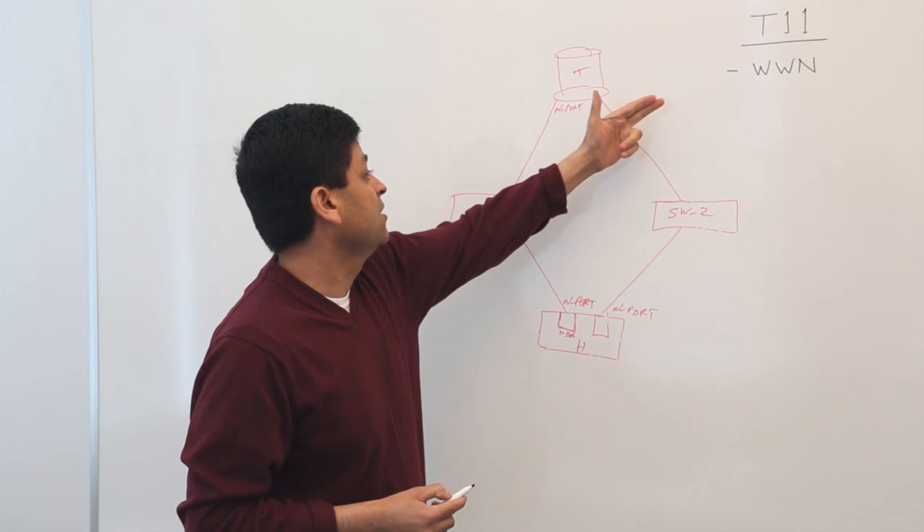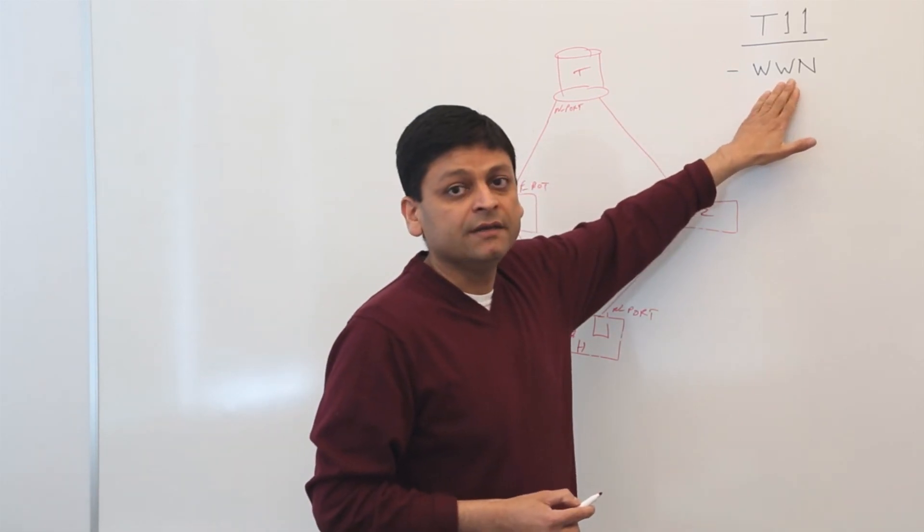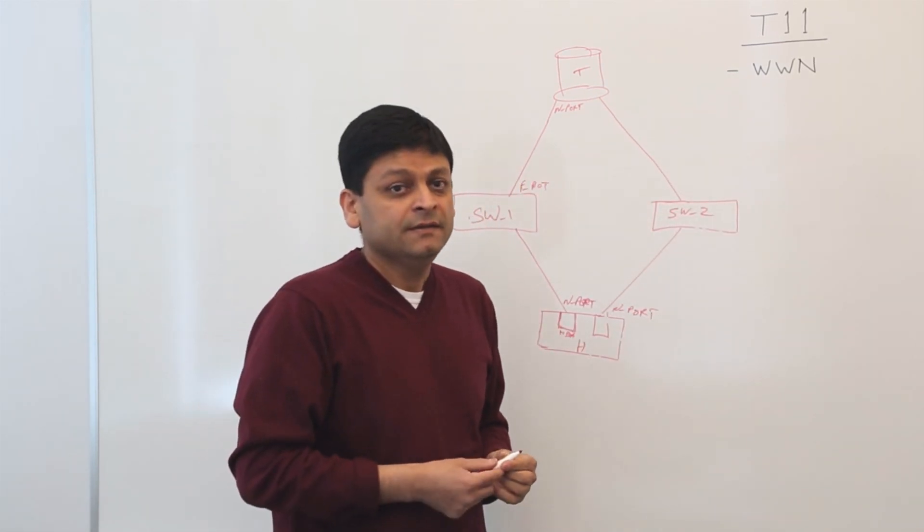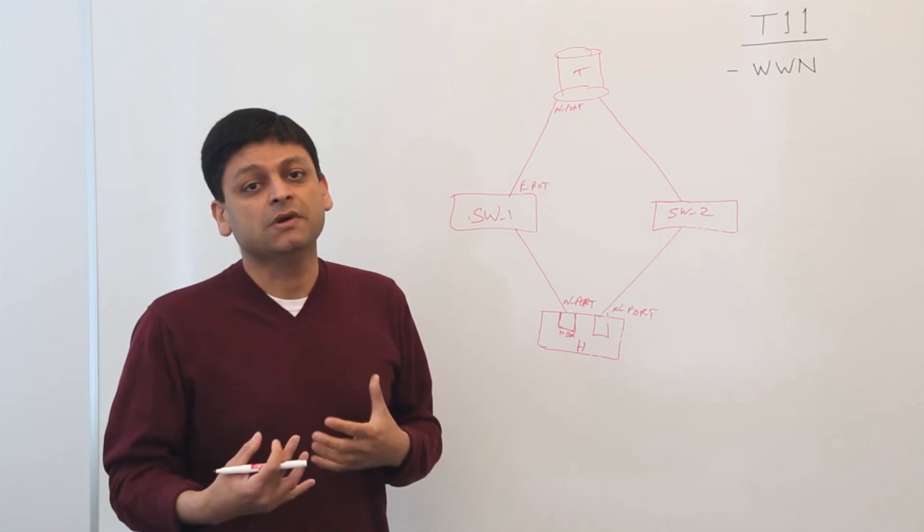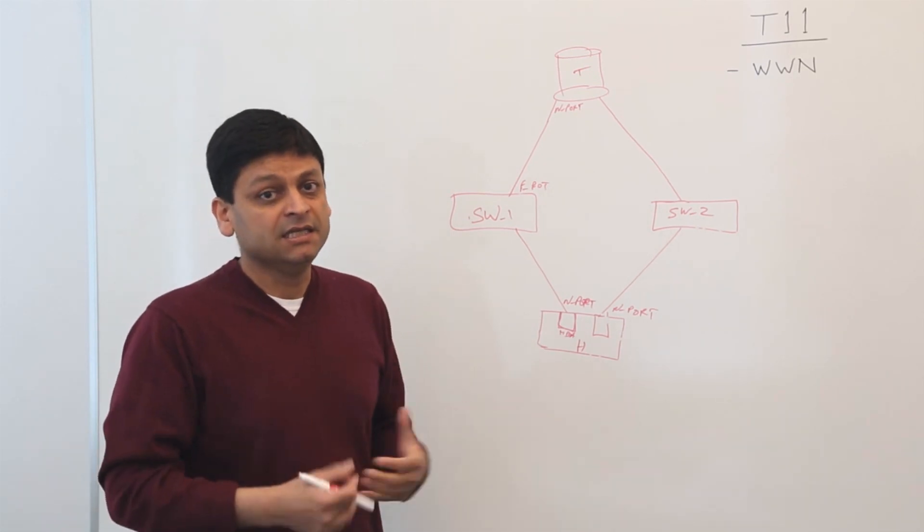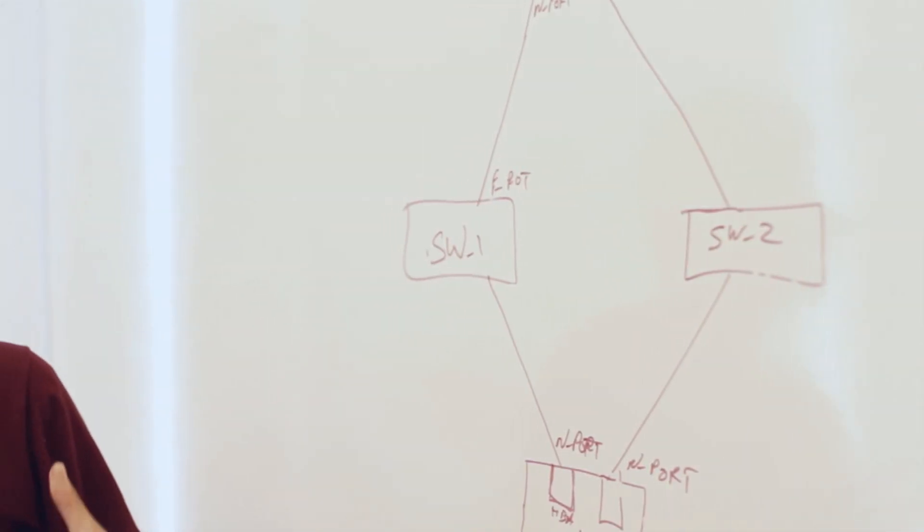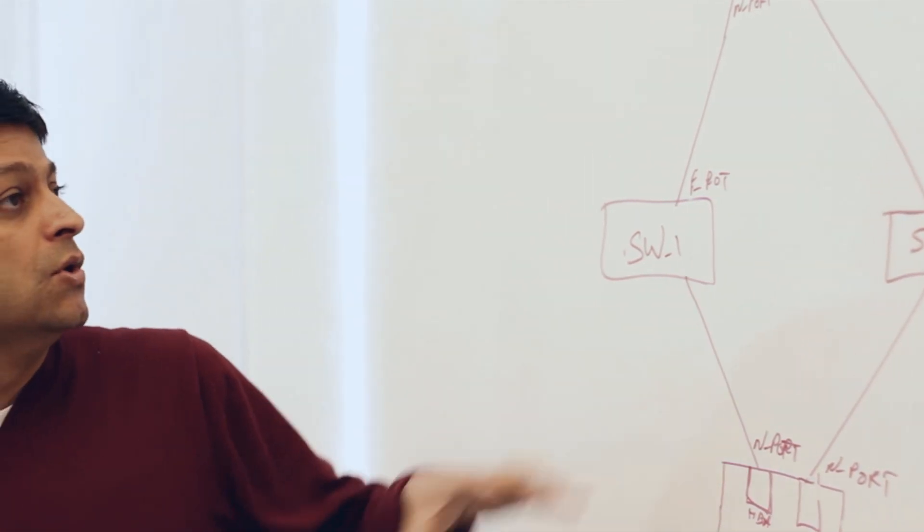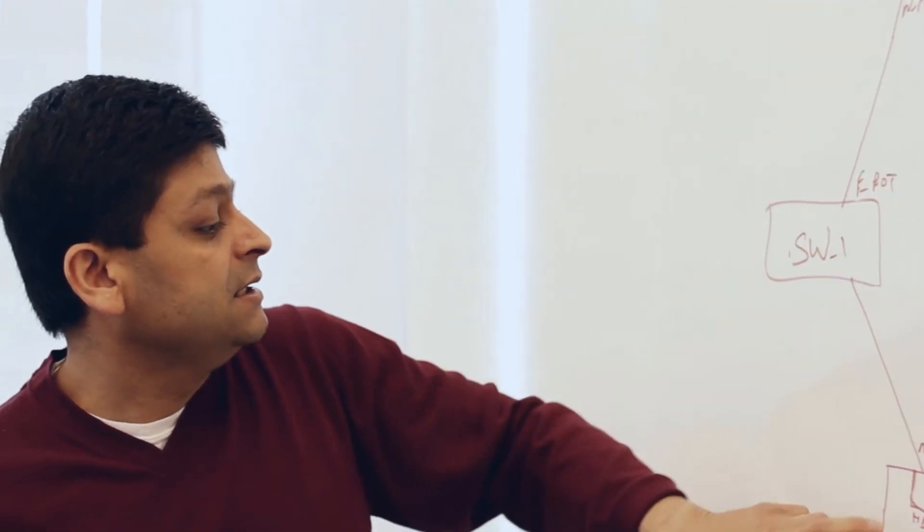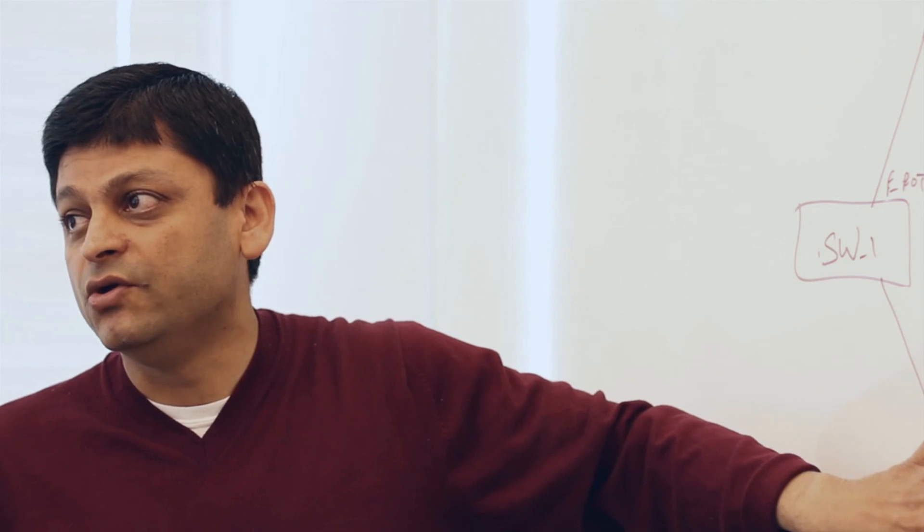Another common term that you might have heard is called WWN. What is WWN? WWN is similar to a MAC address in an Ethernet world where it's unique in the world. So as you can see here, each identity gets a WWN.